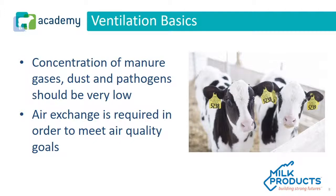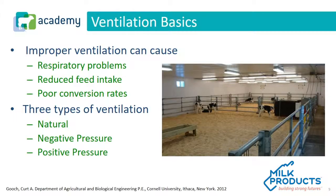To achieve good air quality, we need to think about how often we'll exchange the air within the building. Good ventilation helps address problems that poor ventilation causes: higher respiratory problems, decreased feed intakes, and poor feed conversion rates. We can address these through three different types of ventilation: natural, negative pressure, and positive pressure.